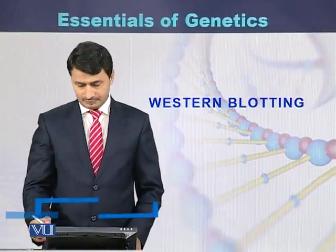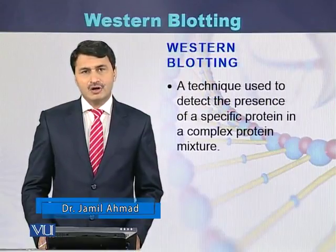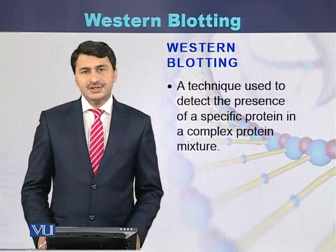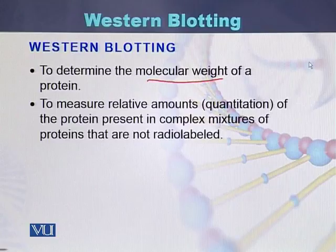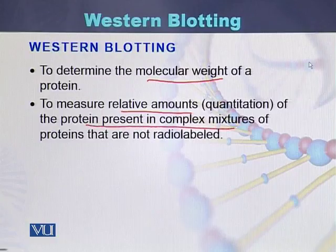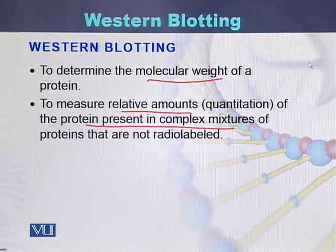Western blotting is a technique used to detect the presence of proteins, or a specific protein, in a mixture of proteins. Western blotting is used to determine the molecular weight of a protein, and it is used to measure the relative amount of protein present in a complex mixture of proteins. These are the two main objectives of Western blotting.